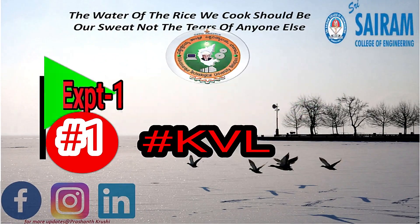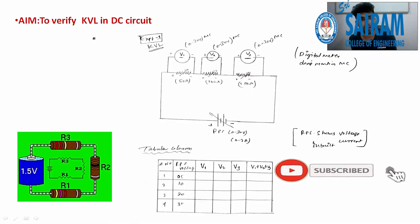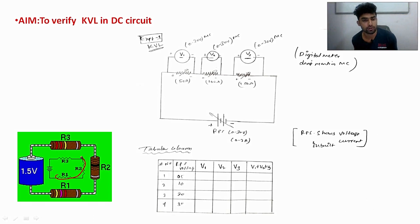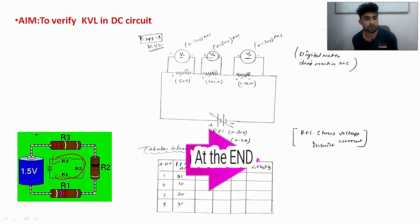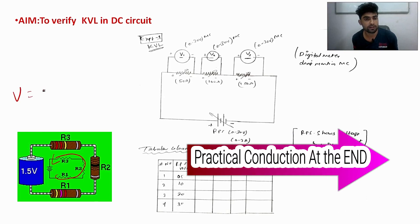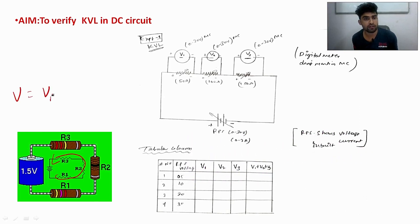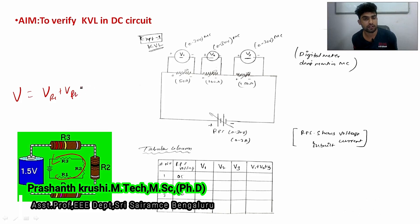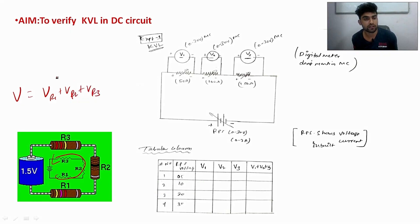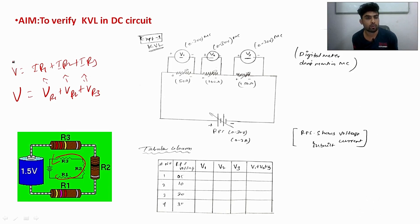Welcome. We will conduct the KVL experiment based on the statement: the algebraic sum of the voltages around a loop is equal to zero. This is a complete loop. R1 is considered an electrical component. The supply voltage equals the voltage drop across R1, plus the voltage drop across R2, plus the voltage drop across R3. So V = I×R1 + I×R2 + I×R3 — the sum of drops equals the supply voltage.